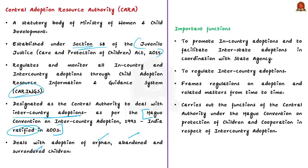CARA primarily deals with adoption of orphaned, abandoned, and surrendered children through its associated or recognized adoption agencies. Key functions of CARA include: promoting in-country adoptions and facilitating inter-state adoptions in coordination with state agencies; regulating inter-country adoptions; framing regulations on adoptions from time to time; and carrying out functions of the central authority under the Hague Convention on Protection of Children and Cooperation in Respect of Inter-Country Adoption.